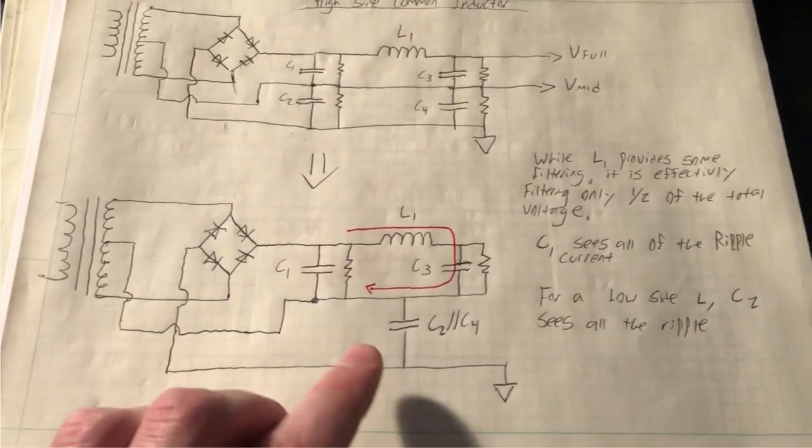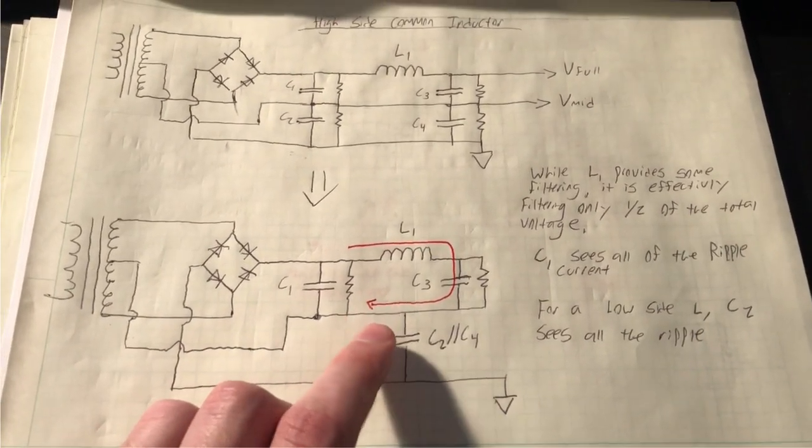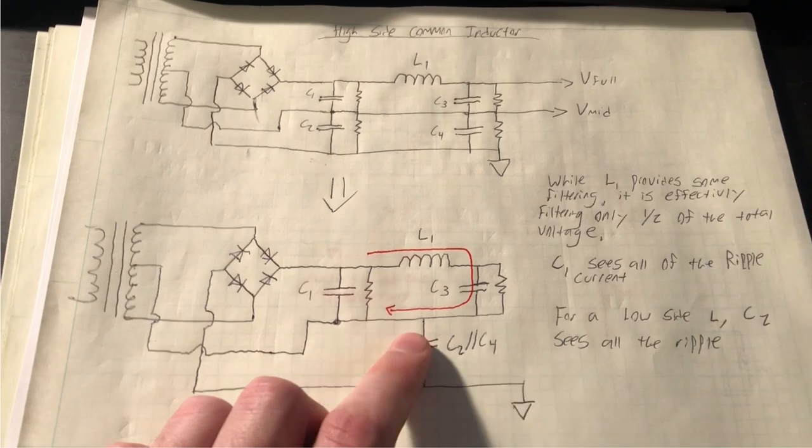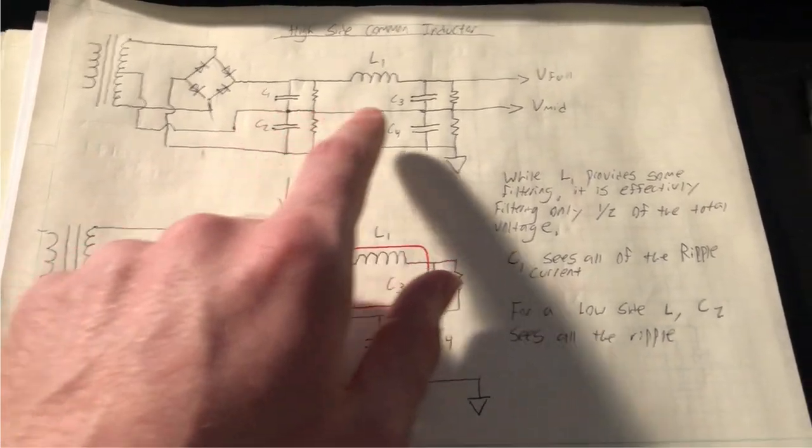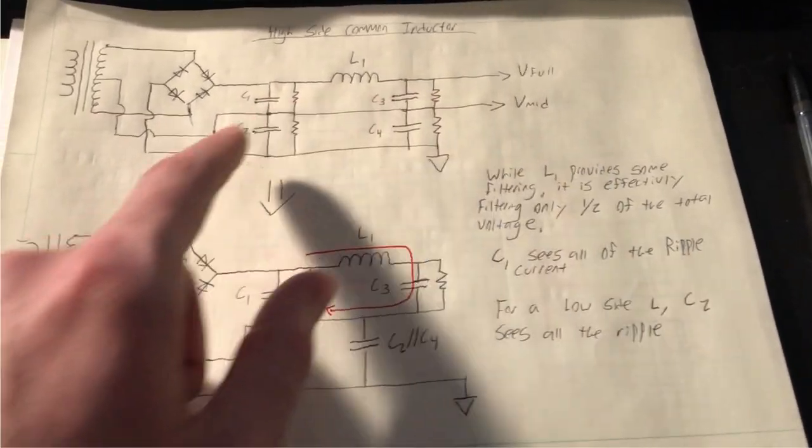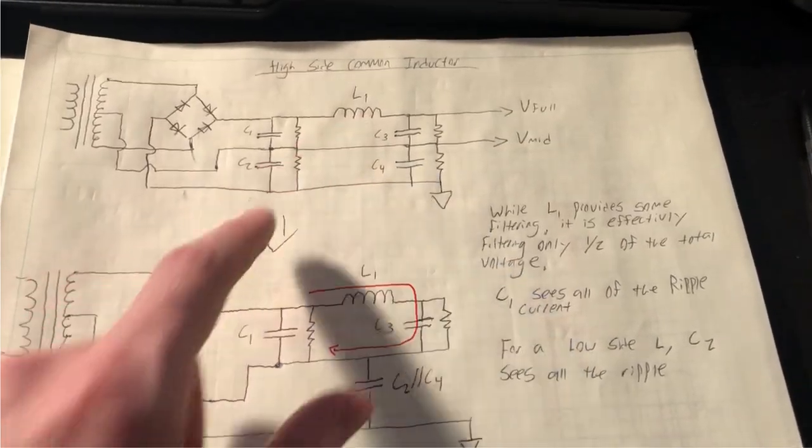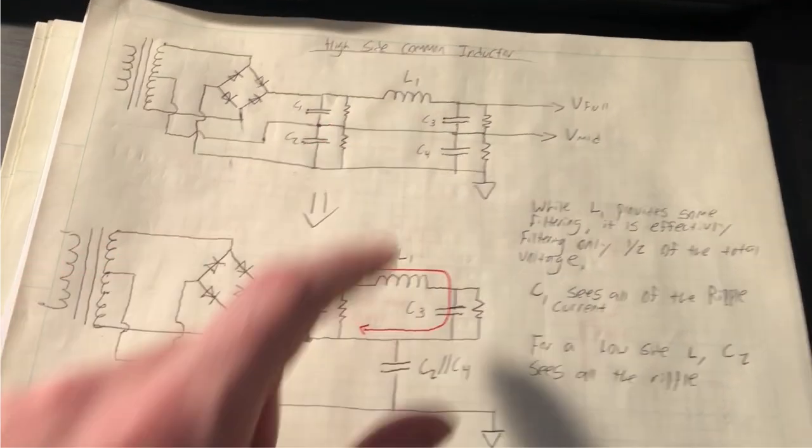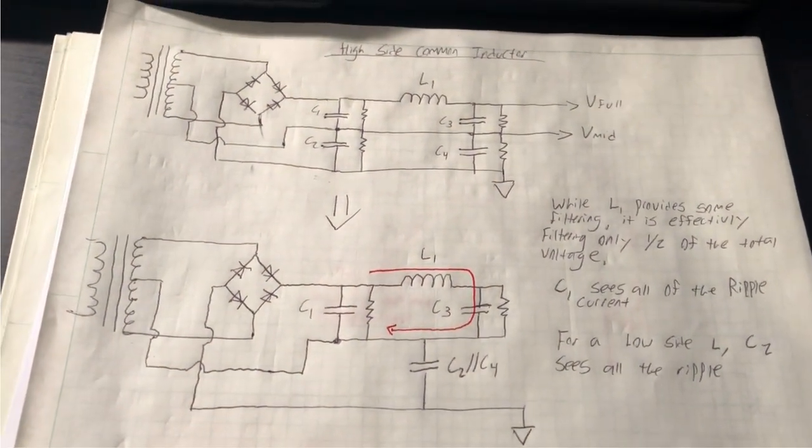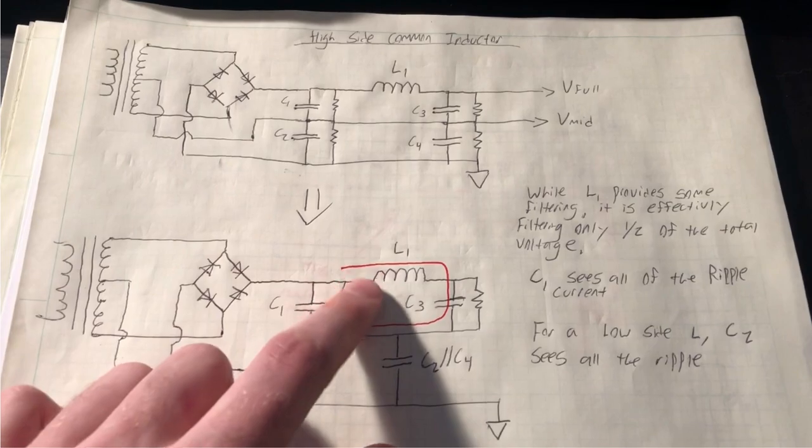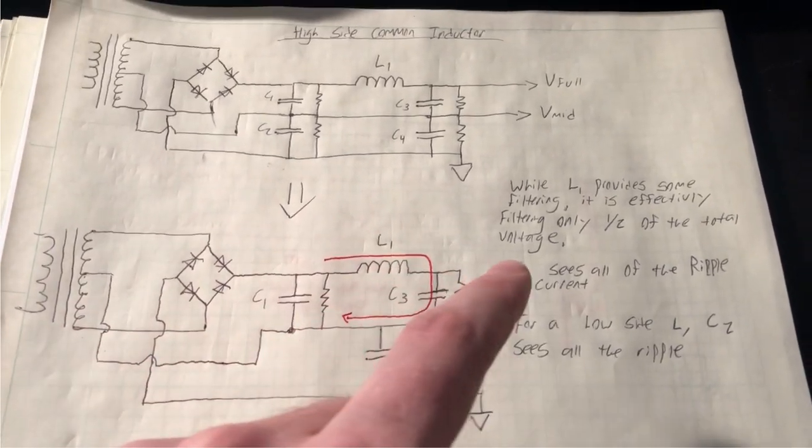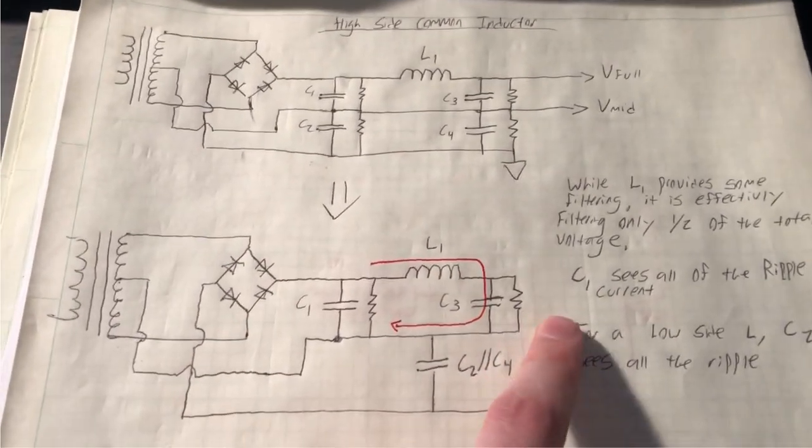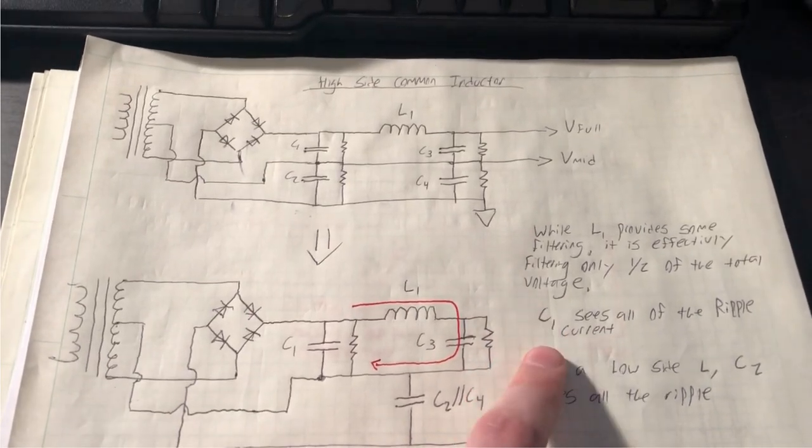Now I should also mention, it's not to say this is ineffective, but again, it's half as good as it could be if we've removed this V mid rail net. We're filtering again only half the voltage, so we get some filtering benefit of L1, but if we're paying for the cost of a filter choke, we might as well get the full benefit of it. Especially again, we want this power supply to be very clean. It's a single ended amp with very little PSRR.